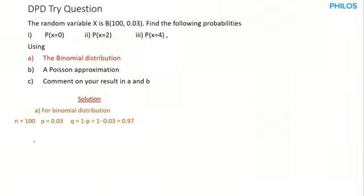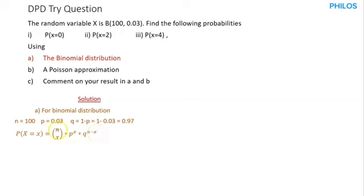Let's write the formula for binomial distribution. The binomial formula says that P(X = x) equals n combination x, times the probability of success exponent x, times the probability of failure exponent (n minus x). Here, n is the number of trials, x is the number of successes given in the question, p is the probability of success, and q is the probability of failure.